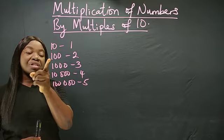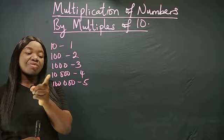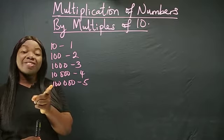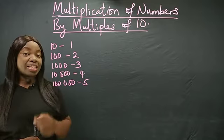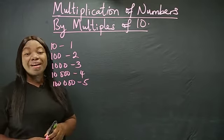100 has 2 zeros, 1000 has 3 zeros, 10,000 has 4 zeros, 100,000 has 5 zeros. So let's get started with multiplication of numbers by these multiples.